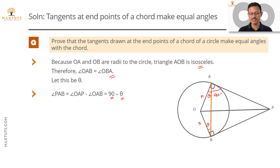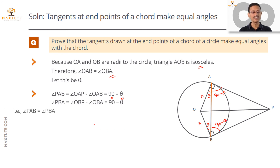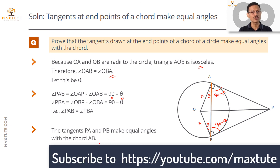By the same reasoning, angle PBA equals angle OBP minus angle OBA, which is also 90 minus theta. Therefore angle PAB equals angle PBA, proving that tangents PA and PB make equal angles with chord AB. This completes the proof.